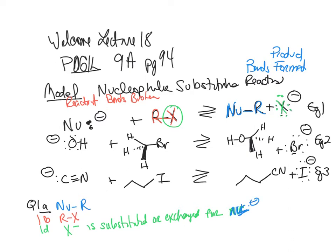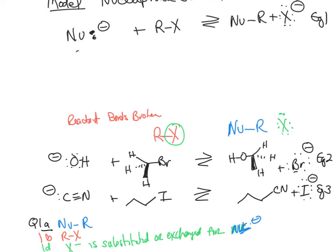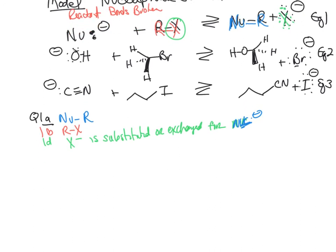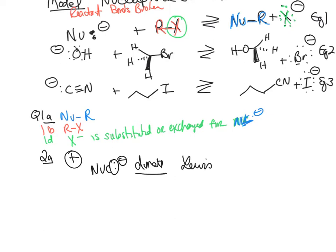For Question 2A: a nucleophile is nucleus-loving and is attracted to an atom with a positive charge. A nucleophile will donate its electrons. Based on this, would a nucleophile be considered a Lewis acid or a Lewis base? Nucleophiles act like bases — they have those lone pairs — so a nucleophile is a Lewis base.